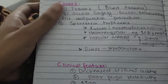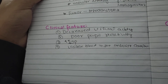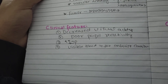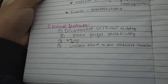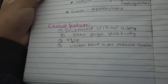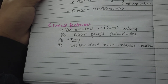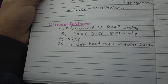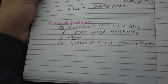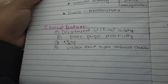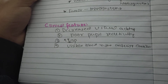Now we are going to look at clinical features. When you look at a patient, you will see decreased visual acuity. There is also increased intraocular pressure and blood visibility in the interior chamber.